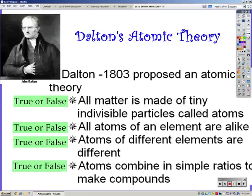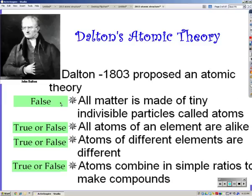Then we have John Dalton, who proposed an atomic theory. He said that all matter is made of tiny indivisible particles called atoms, all atoms of an element are alike, atoms of different elements are different, and atoms combine in simple ratios to make compounds.